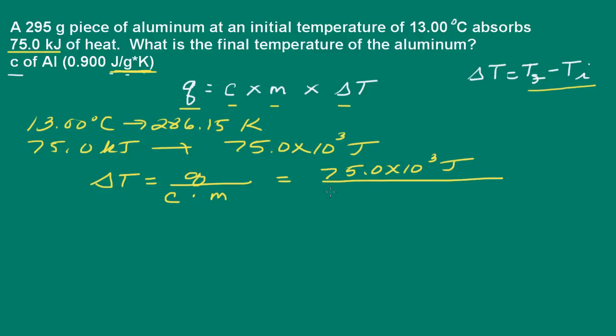So delta T is going to be equal to Q over the specific heat capacity times the mass. Our heat then is 75 times 10 to the third joules, and then we're going to divide that by the specific heat capacity of the aluminum, that's 0.9 joules per Kelvin per gram, and then we multiply that by the mass of the aluminum, which is 295 grams. Make sure our units cancel out, and we're just left in Kelvin.